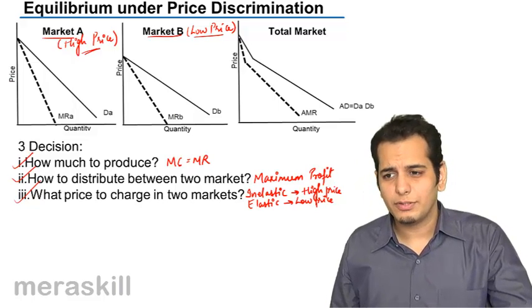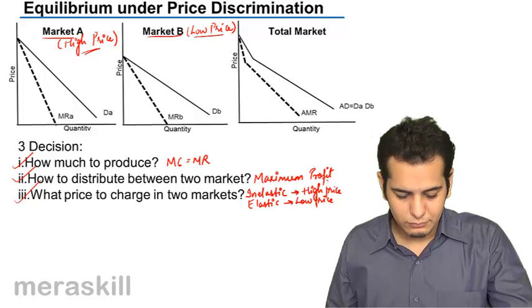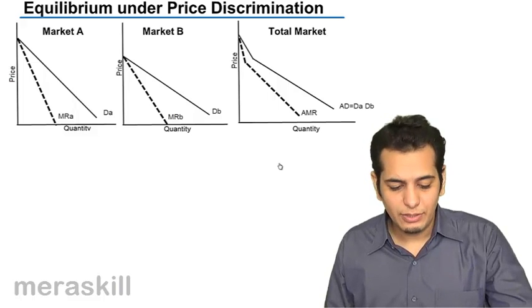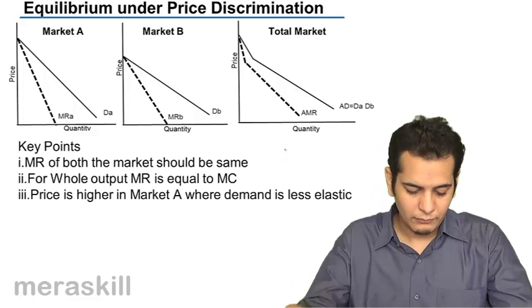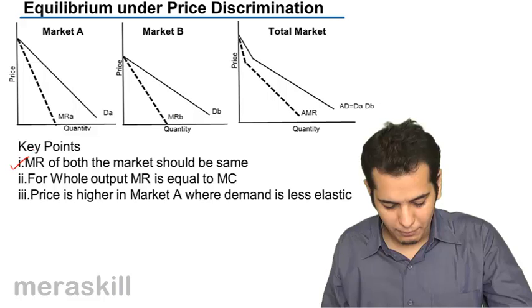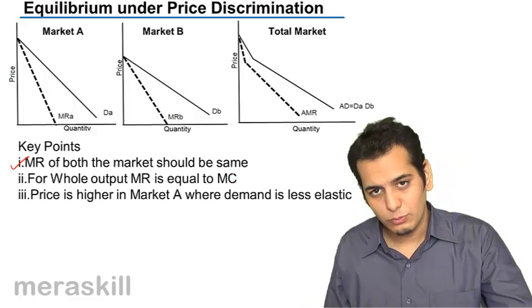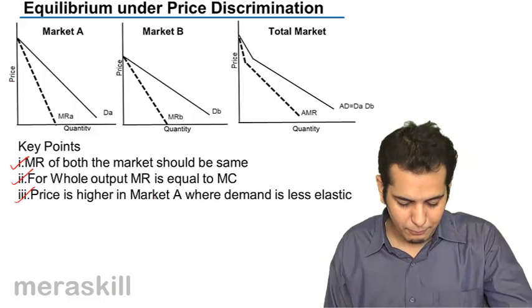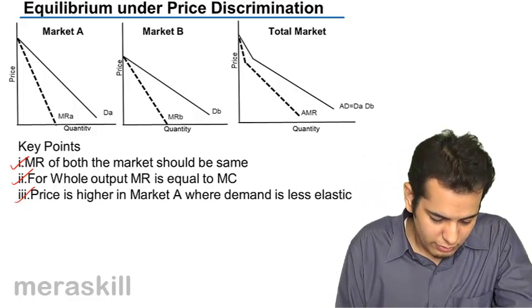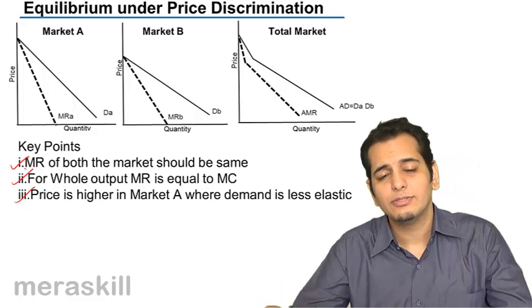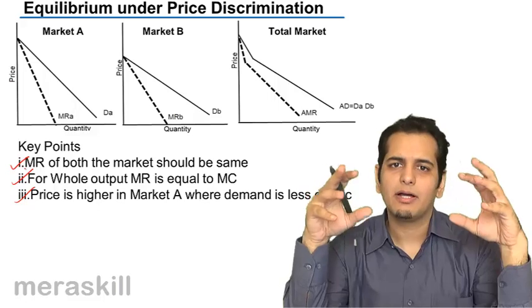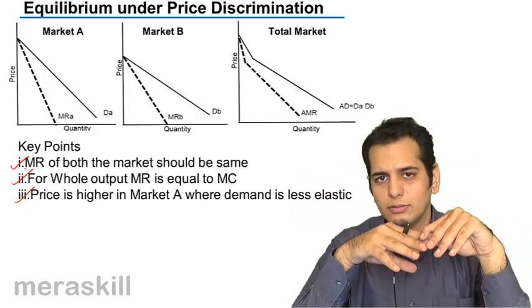We've answered all three questions. Now let's see how the monopolist reaches equilibrium. The important points to note are: MR of both markets should be the same; for whole output, MR should be equal to MC; and the price is higher in market A where demand is less elastic. The marginal revenue in both market A and market B should be equal.